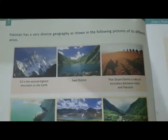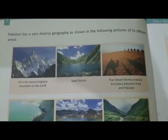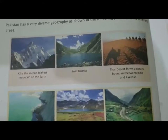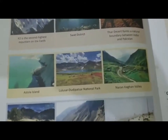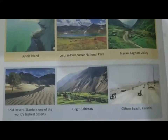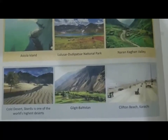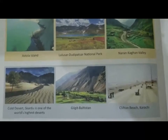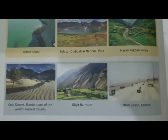When we turn to page 6, we see different photos showing the diverse geographical areas of Pakistan. The first photo shows Mount K2, the second highest mountain on Earth. There is also a beach in Swat District, the Thar Desert, the Astola Island National Park, the Naran Kaghan Valley, the Cold Desert Skardu, Gilgit Baltistan, and Clifton Beach in Karachi. Pakistan has a very diverse geography.